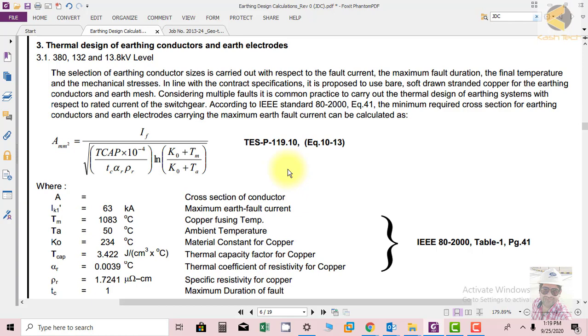and earth electrode carrying the maximum fault current can be calculated. You will find this formula in IEEE standard AT 2000. This is the most famous IEEE standard